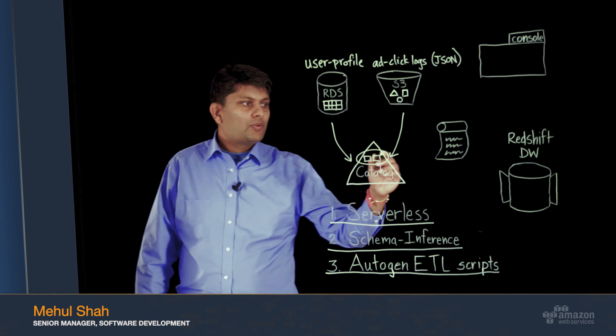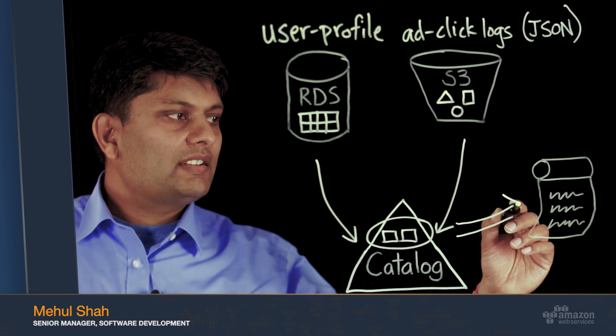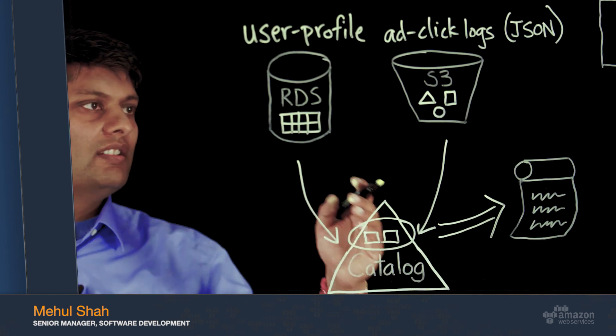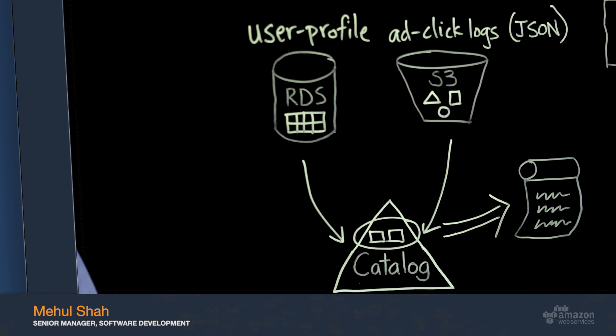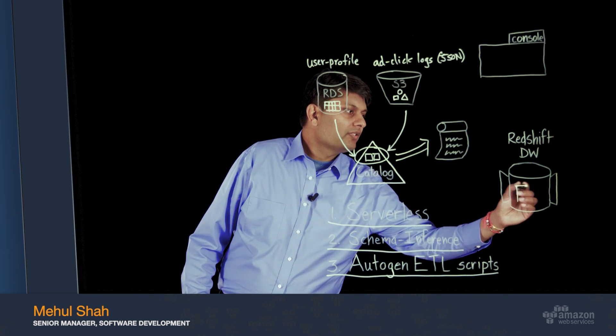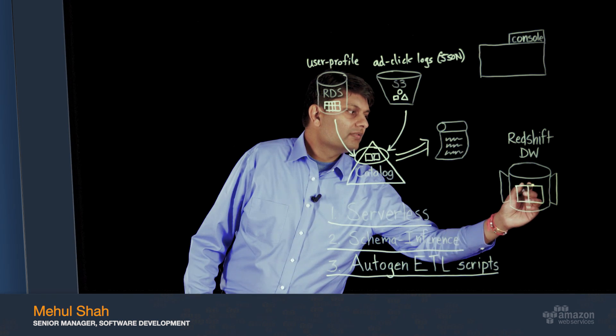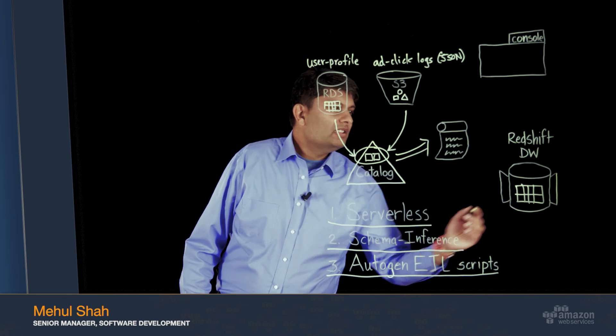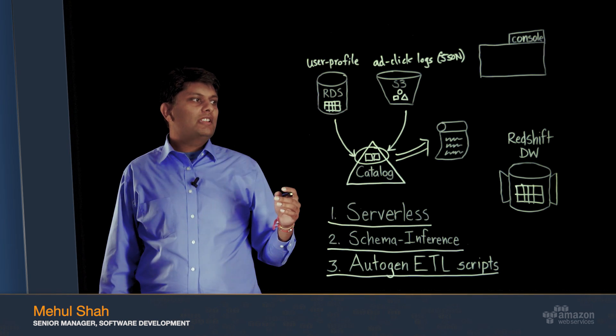You can then point Glue to these tables and it will automatically generate the scripts that are needed to extract and transform that data into tables in Redshift. These scripts will flatten all semi-structured data, no matter how complex the data is. They will transform the input into target data types, throw away unneeded columns, and they'll adapt to any changes in the structure of the input and the output.